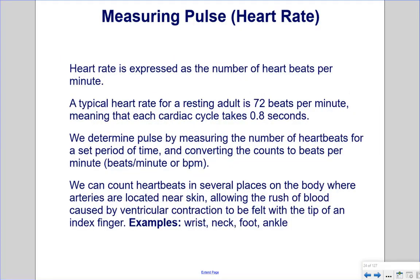Heart rate is expressed as the number of heartbeats per minute. A typical resting adult heart rate is 72 beats per minute, meaning each cardiac cycle takes 0.8 seconds. We determine pulse by measuring heartbeats over a set period and converting to beats per minute (BPM). We can count heartbeats at several places on the body where arteries are located under the skin, such as the wrist, neck, foot, and ankle.